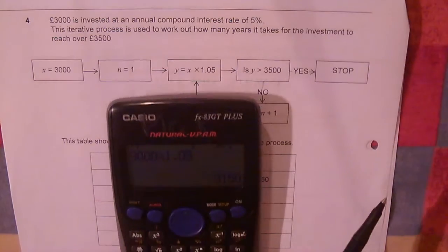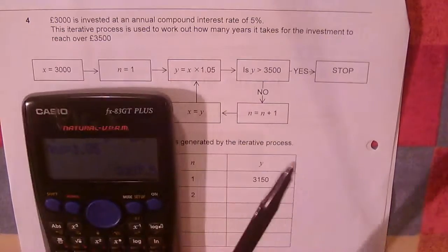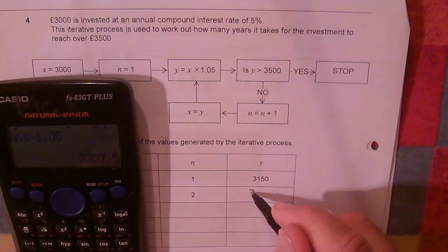So here's my output of £3,150. I'm going to times it by 1.05. And my output is £3,307.5 or £3,307.50.